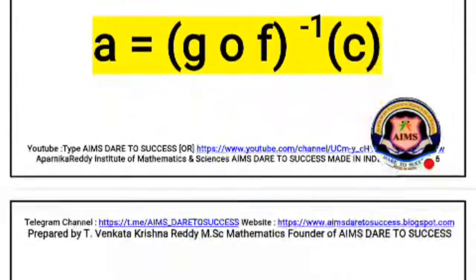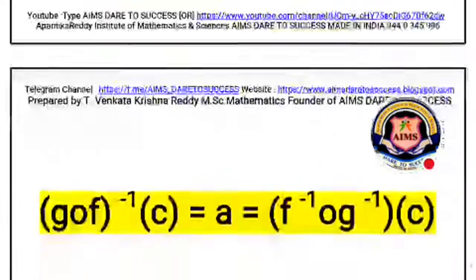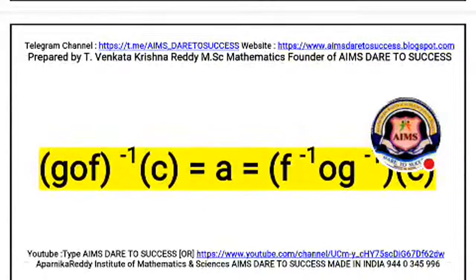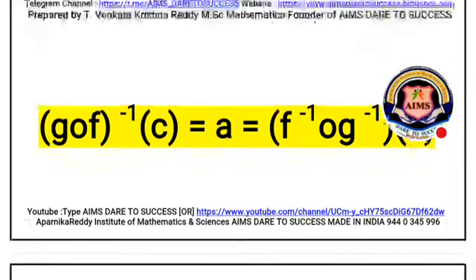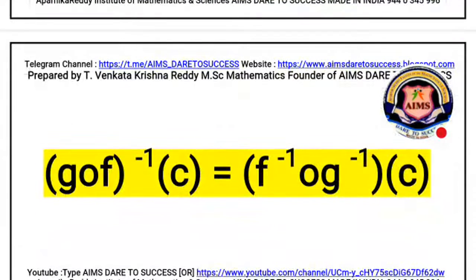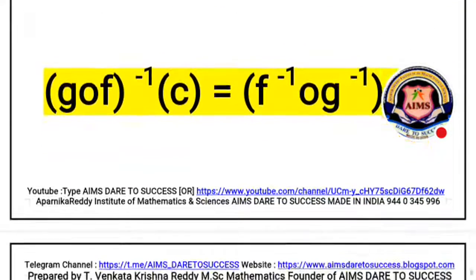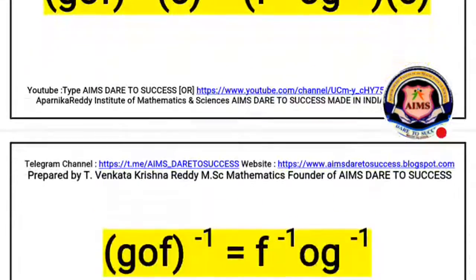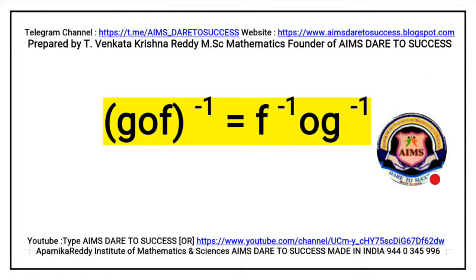From equations 1 and 2, a is equal to G circle F whole inverse of c, and a is equal to F inverse circle G inverse of c. Since both left-hand sides equal a, the right-hand sides are equal: G circle F whole inverse of c is equal to F inverse circle G inverse of c. Cancelling c on both sides, therefore G circle F whole inverse is equal to F inverse circle G inverse.